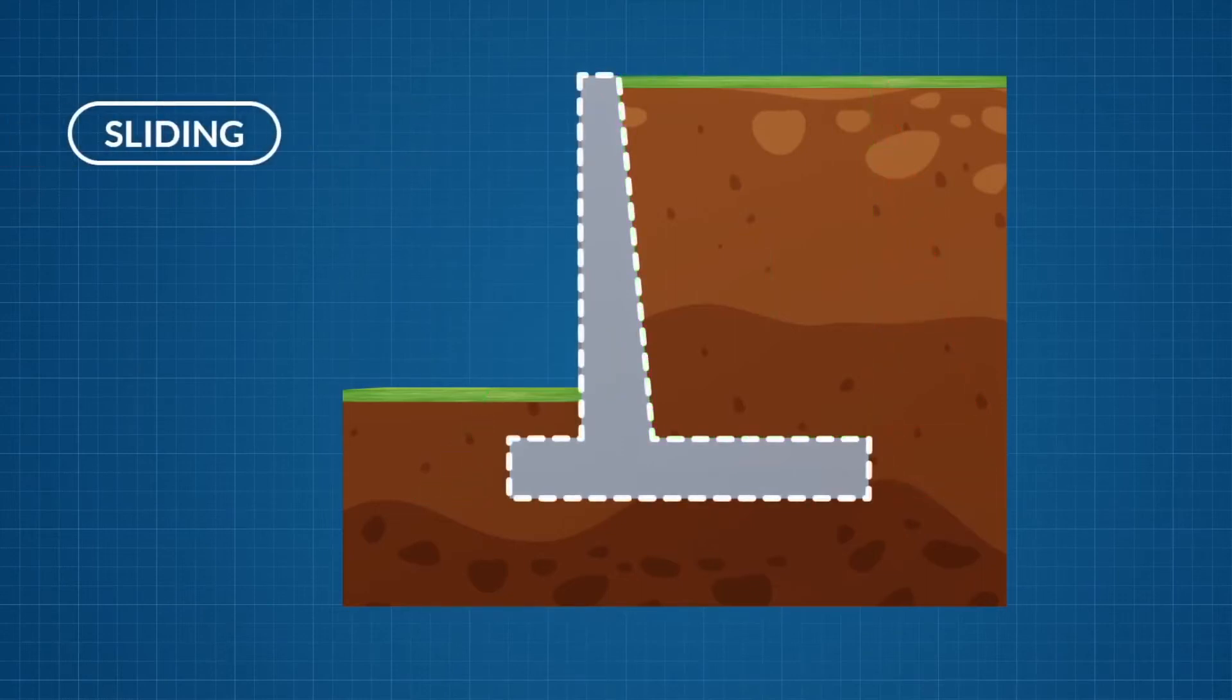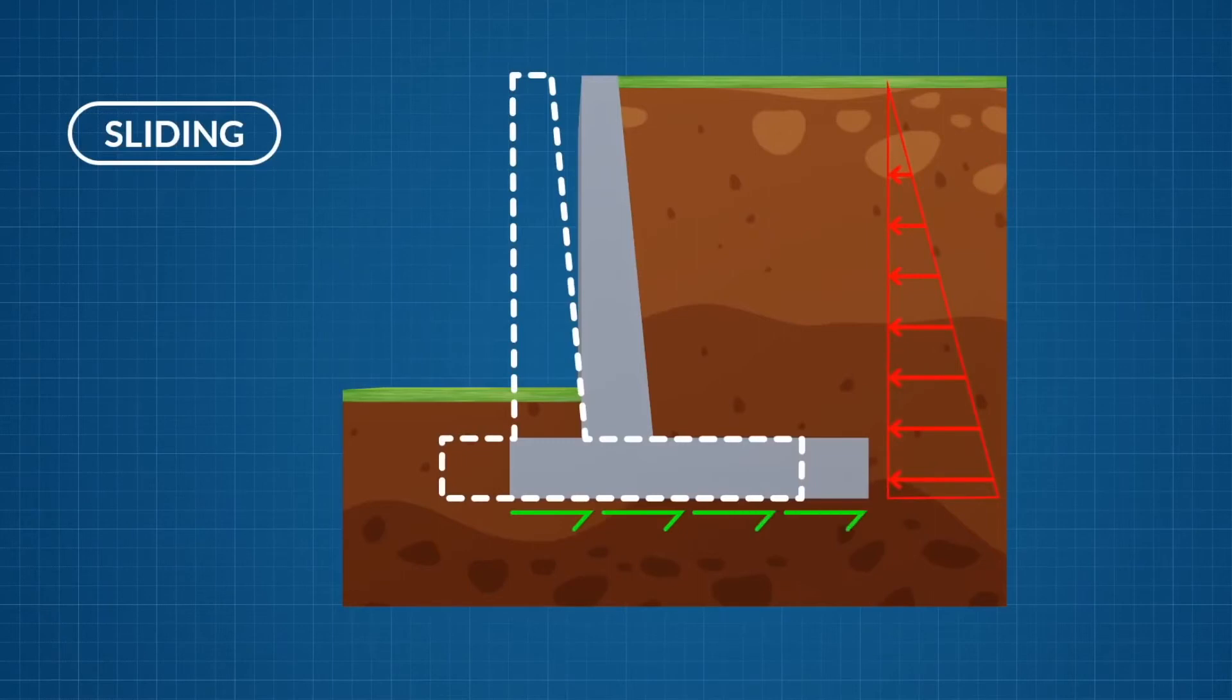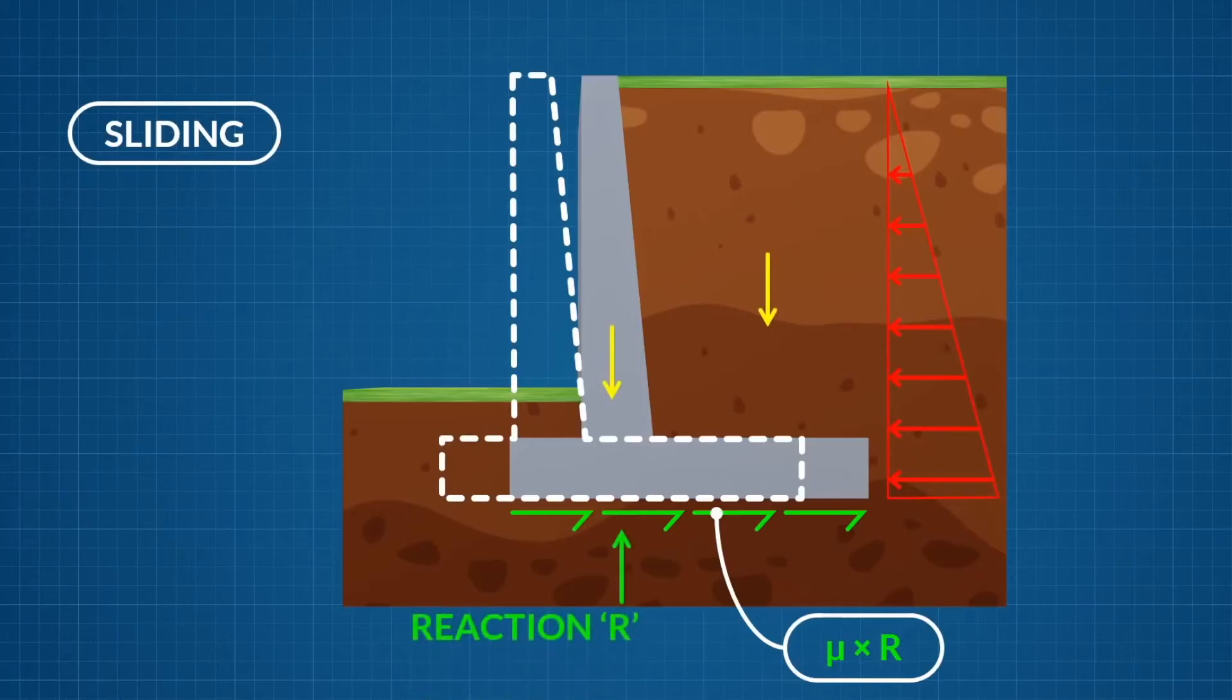The second type of failure is by sliding. The active earth pressure applied to the wall acts as a destabilizing force sliding the wall forwards. The stabilizing force is provided by the friction between the base slab and the soil below. The frictional force is given by mu times r, where mu is the friction coefficient between soil and concrete and r is the resultant soil pressure.